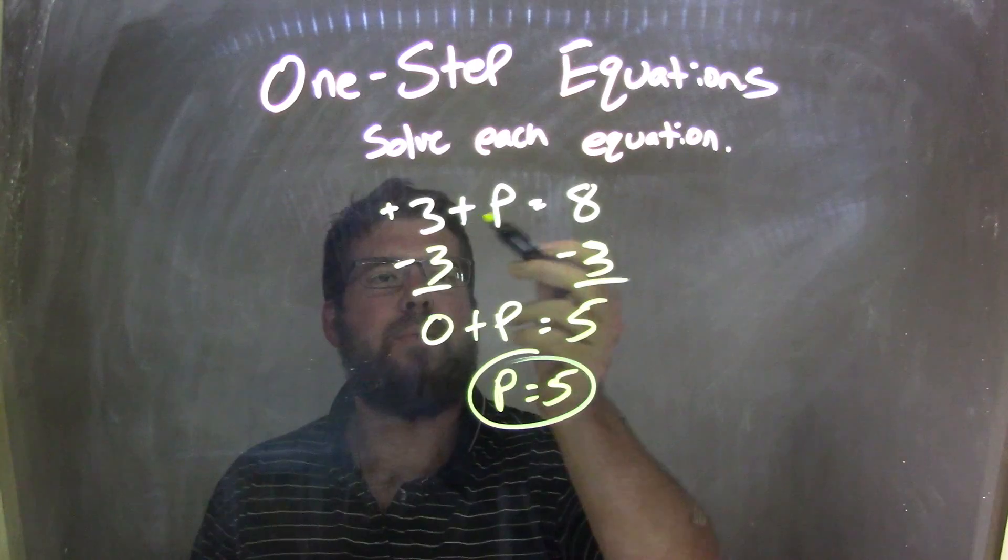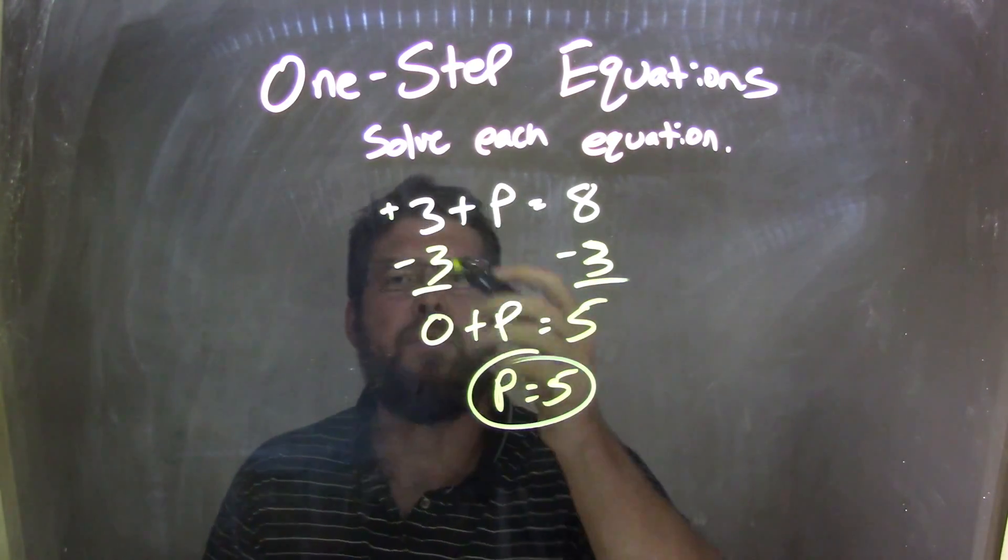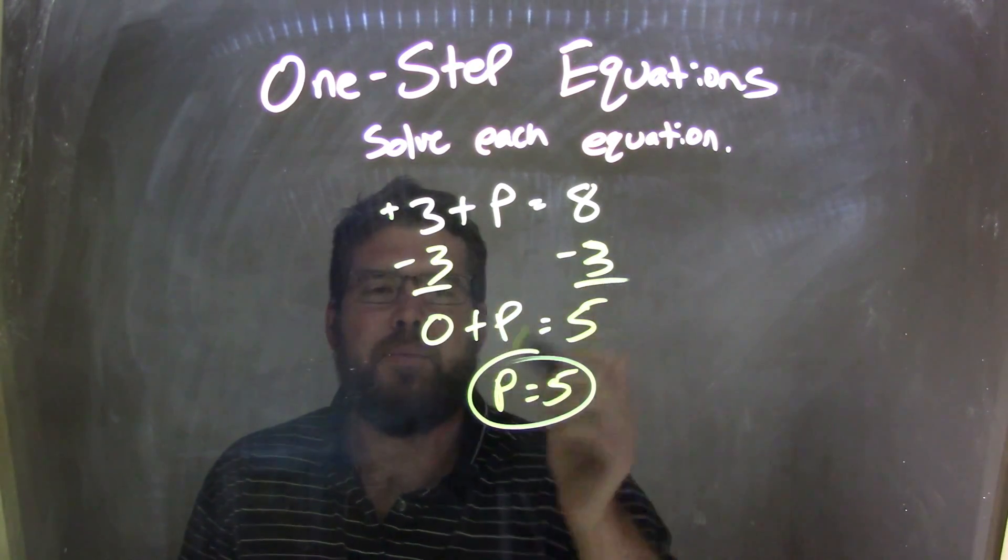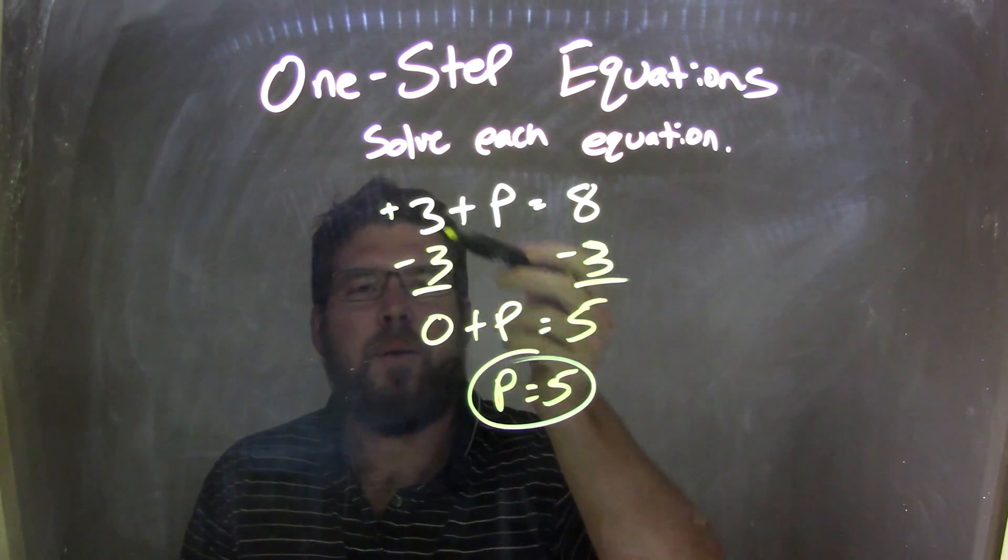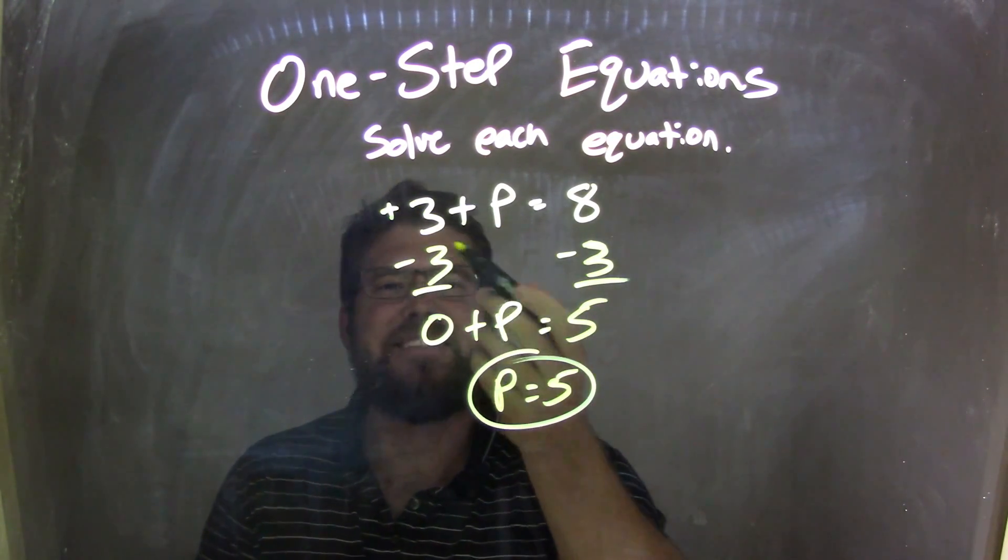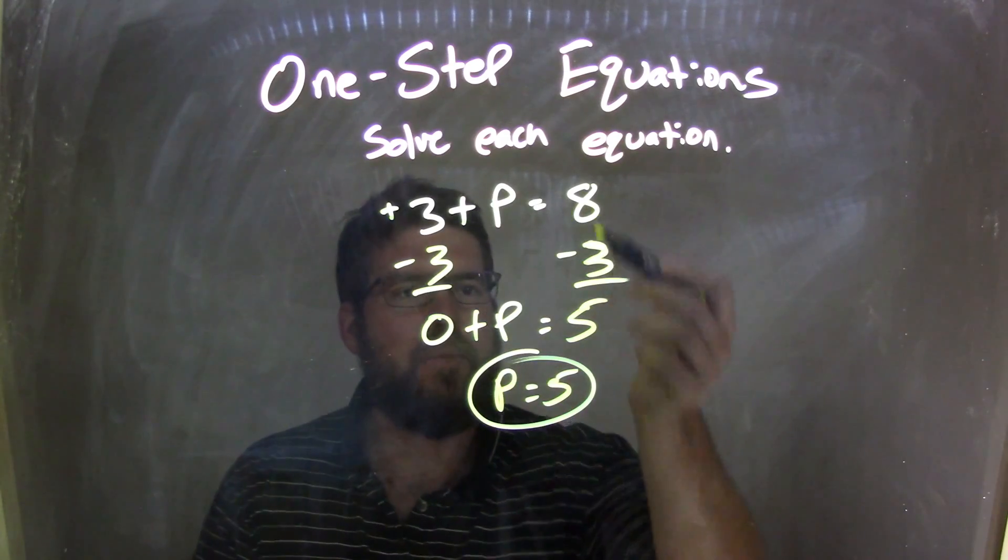So let's recap here. I'm given 3 plus p equals 8. In this problem, I decided just to subtract a 3 to both sides. There was a positive 3 up there, and so I knew that there was a plus 3, opposite addition and subtraction. So I subtracted the 3 to both sides.